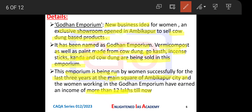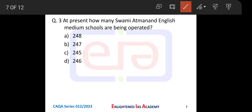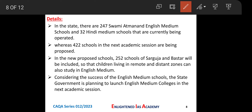Next question about Swami Atmananand schools. Currently in Chhattisgarh state, there are 247 Swami Atmananand English Medium Schools and 32 Swami Atmananand Hindi Medium Schools that are being operated.